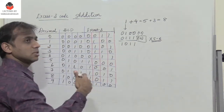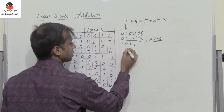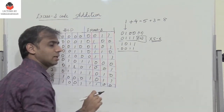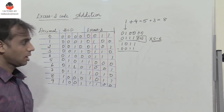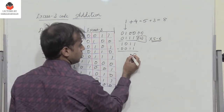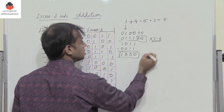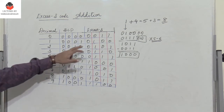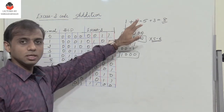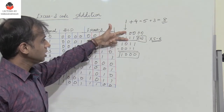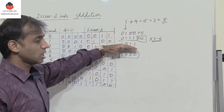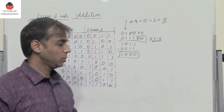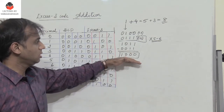Because we have added 3 twice, we have actually added an excess of 6. So to get the XS3 result, I need to subtract 0011 — I need to subtract 3 to get the XS3 addition answer. So we get 1000, which corresponds to the value 8. So this is the case when we are adding two single-digit numbers: the total added result will be in excess of 6, so I need to subtract 3 to get the XS3 result.